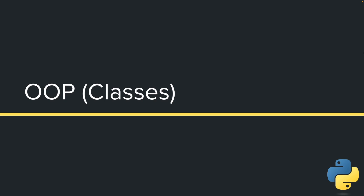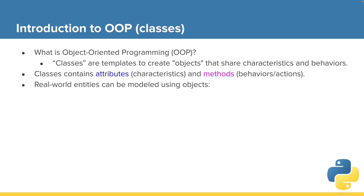We are approaching the latter portions of the course, and object-oriented programming, or OOP, also known as classes, is probably the last big component of foundational Python programming we're going to learn about. This will enable us to do a lot more things in Python, so let's talk about it.